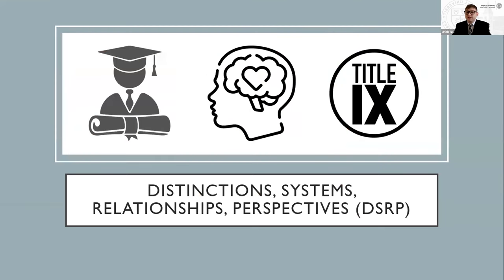DSRP — distinctions, systems, relationships, and perspectives — is inherent to analyzing the three systems Uriah identified: mental health, education, and Title IX.